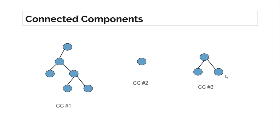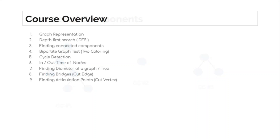After connected components, we would move on to the bipartite graph test, also known as the two-coloring test. After that, we would be studying cycle detection — how we can find out whether a given graph contains a cycle or not.